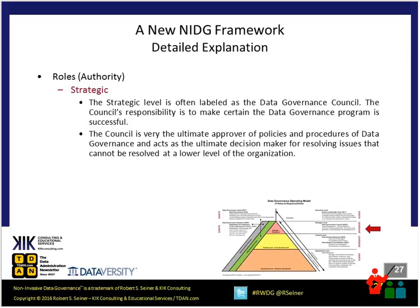The next level down in the operating model is the strategic level, typically called a data governance council. I've also seen it called a data governance organization or data governance office, though I use that term to describe the group putting the program in place. The council is typically the ultimate approver of policies and procedures, and also acts as the ultimate decision maker when decisions can't be resolved at the tactical level and get escalated up to the strategic level.